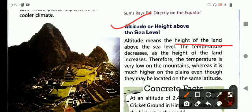The temperature decreases as the height of the land increases. As we move upward, the temperature starts decreasing. Therefore, the temperature is very low on the mountains whereas it is much higher on the plains, even though they may be located on the same latitude.